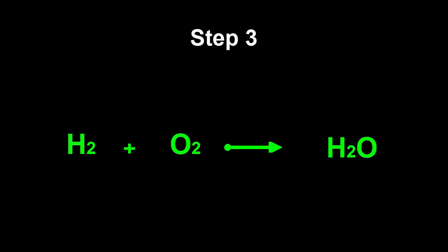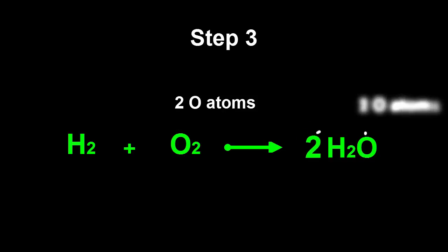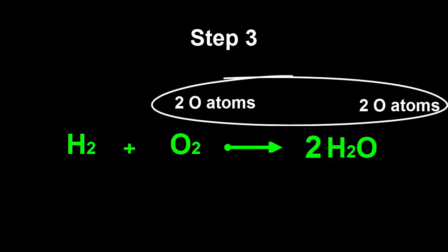Step 3. Pick an atom type that isn't balanced such as oxygen and change a coefficient to fix it. It's got two atoms on the left hand side and only one on the right hand side. Here a 2 in front of the H2O does it. That doubles the number of oxygen atoms on the right hand side to 2 because two H2O molecules will contain two oxygen atoms. The oxygen atoms are now balanced.